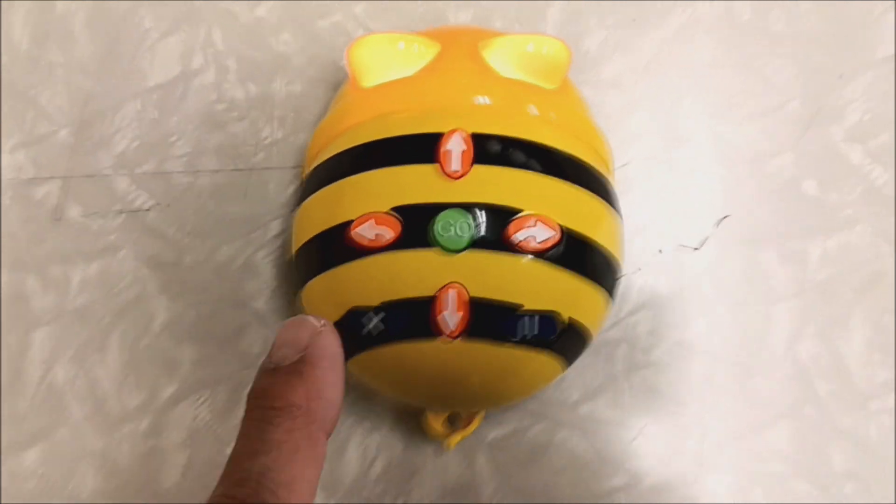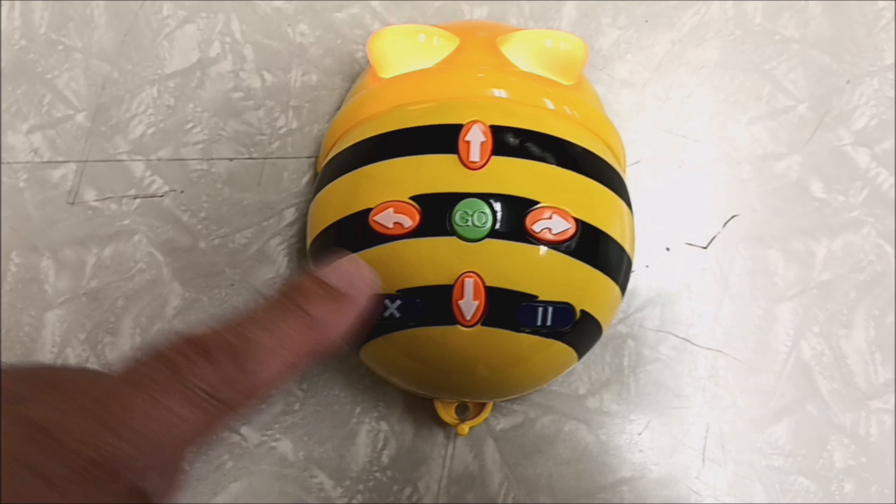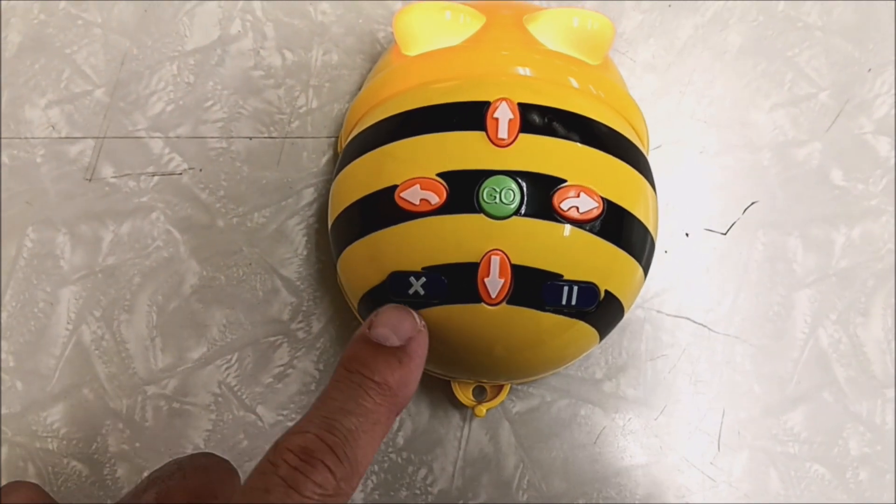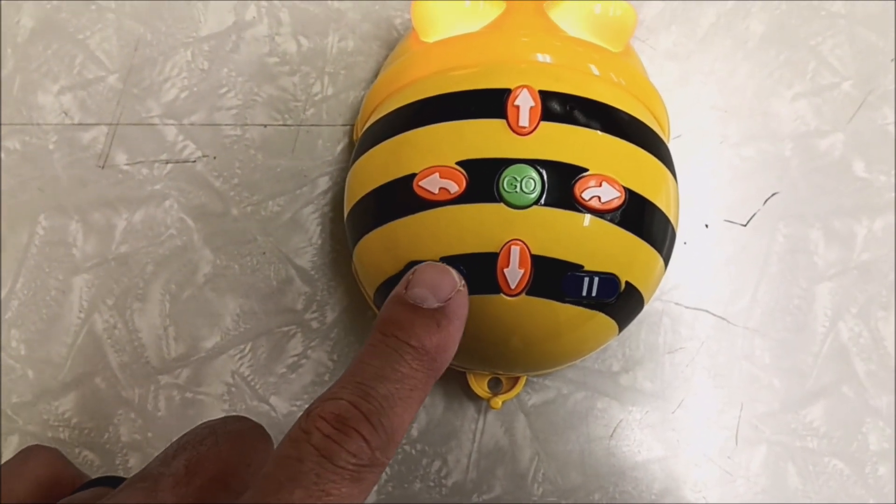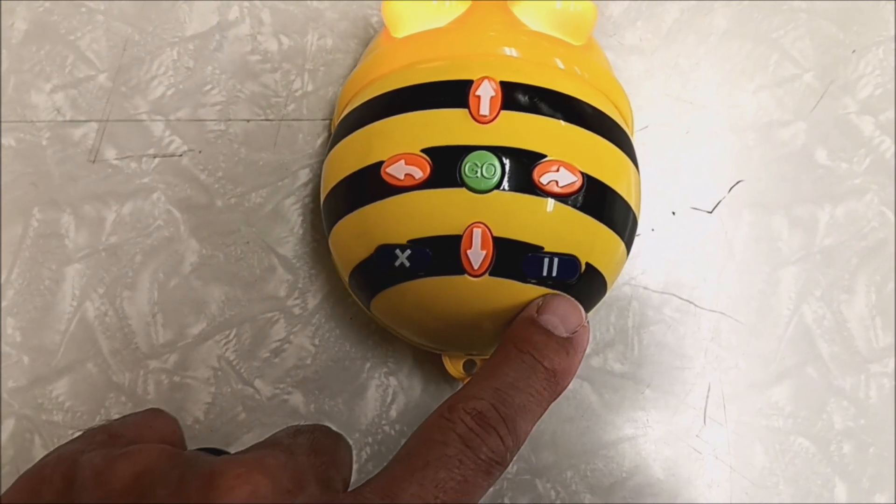Okay, now let's take a look at the controls. Super easy. We just have forward, right, left, backwards. This X is going to clear everything that you've done, and this is basically going to pause your program.